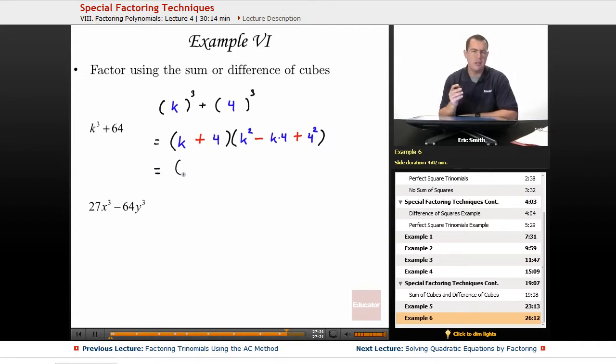Don't forget this last step, where we really just go ahead and clean everything up. So k plus 4, k squared minus 4k plus 16.